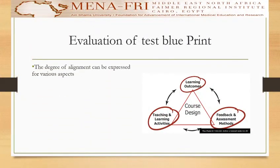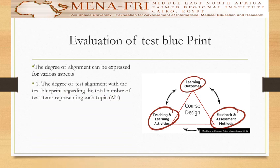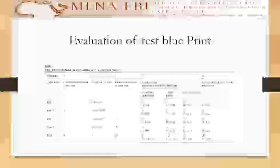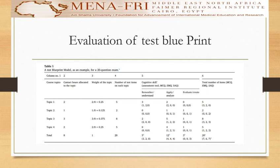The degree of alignment can be expressed for various aspects. First, the degree of test alignment with the test blueprint regarding the total number of test items representing each topic — this is called ALC. Second, the degree of test alignment with the test blueprint regarding the total number of test items measuring each cognitive skill. As an example, this test was a 20-question-based test where each topic was represented according to its importance, weight, and the number of skills it measures.